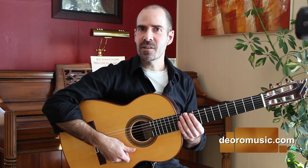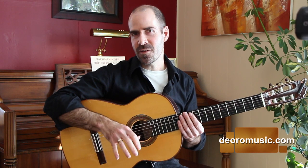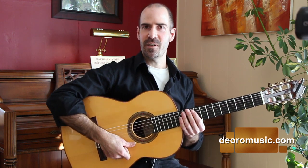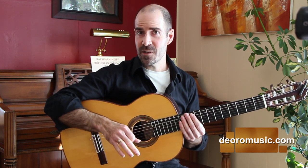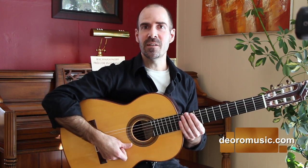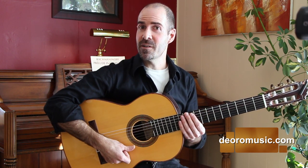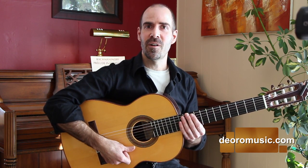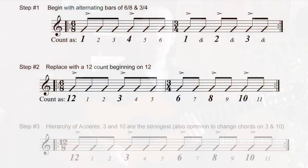Now the next thing we want to do is just shift our thinking. We're going to count it a little differently now — we're going to count in the 12-beat. What we called beat 1 before we're going to call beat 12. So we have 12, 1, 2, 3, 4, 5, 6, 7, 8, 9, 10, 11.